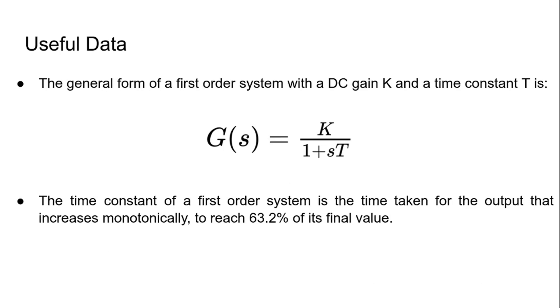We will be using the following concepts to solve the problem. The general form of a first order system with a DC gain k and a time constant t is k by 1 plus st. Also, the time constant of a first order system is the time taken for the output that increases monotonically to reach 63.2% of its final value.